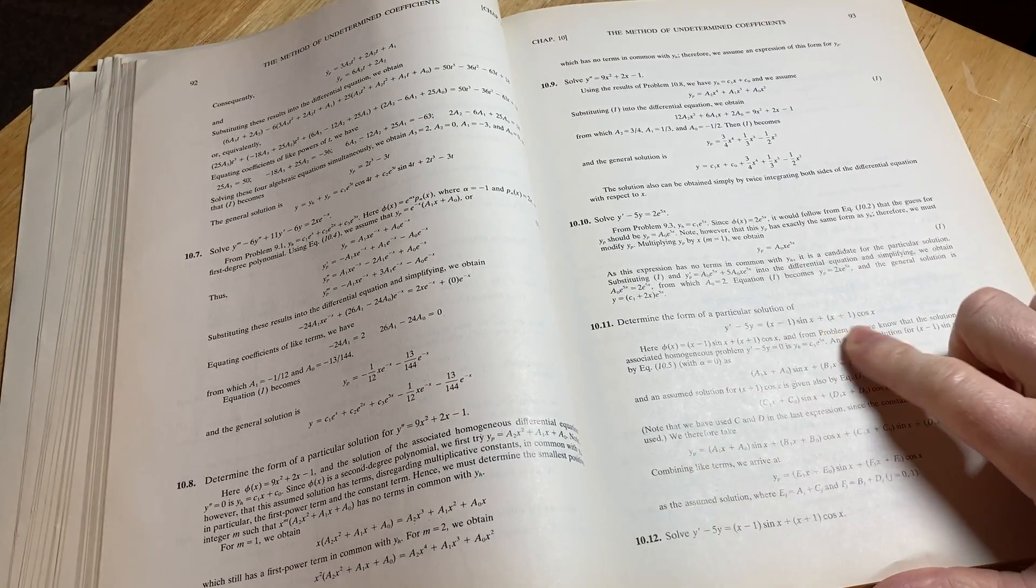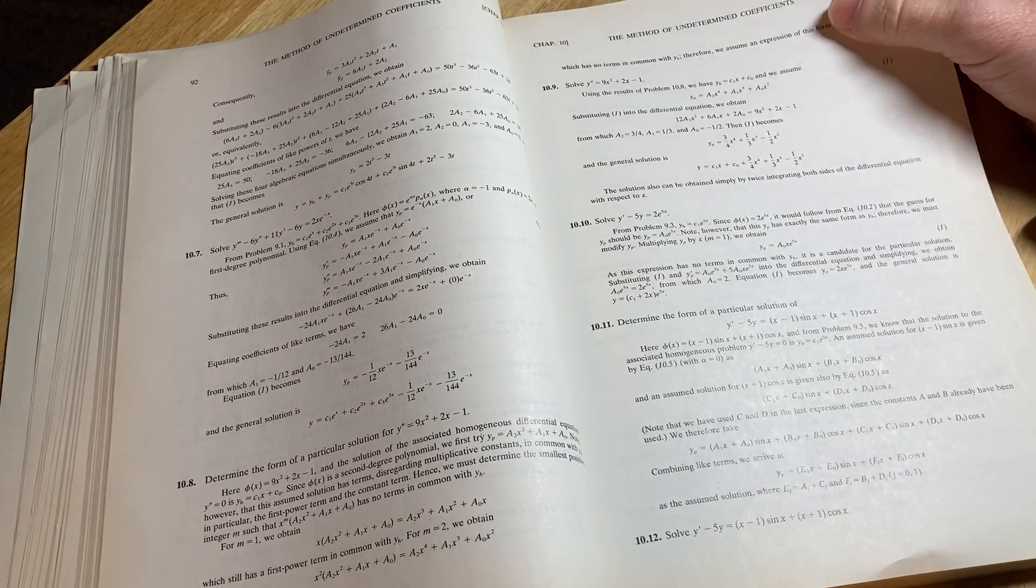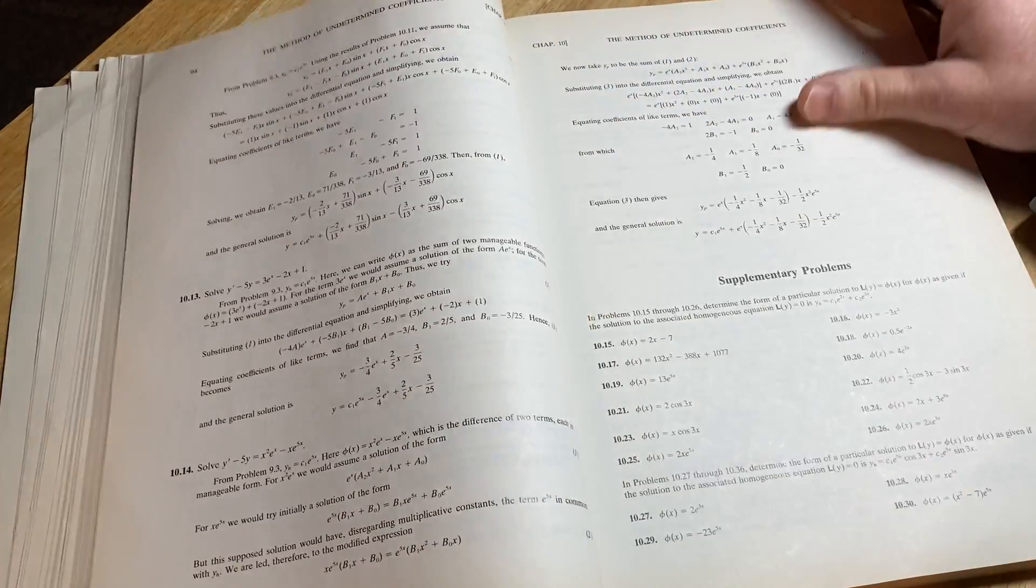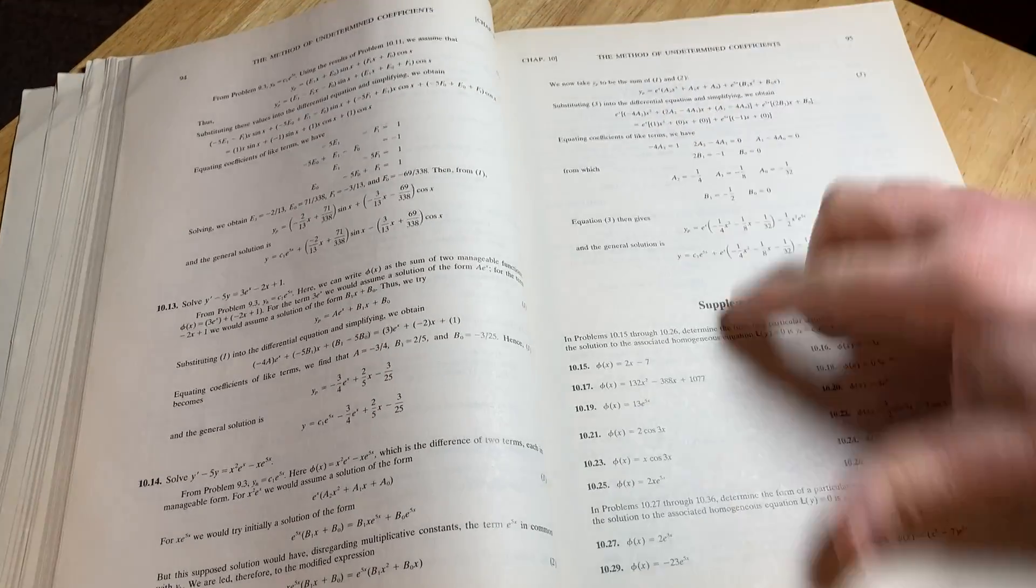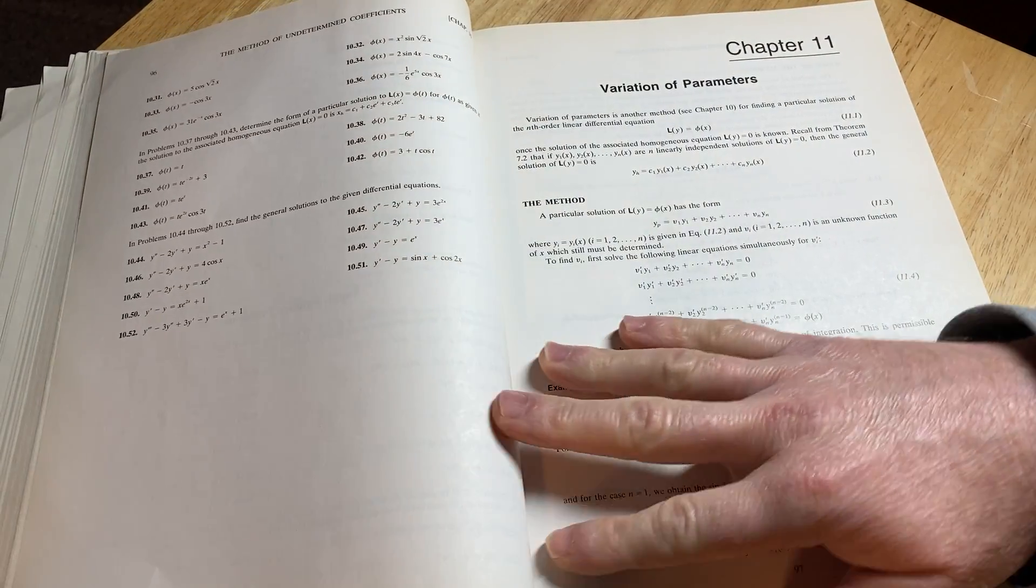I see here you have sines and cosines on the right-hand side. That's one of the cases when you would use this method. And you'll notice here that's what you have: sines, cosines, exponentials.